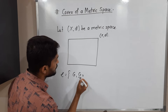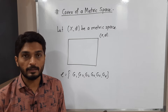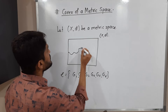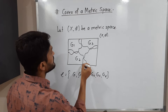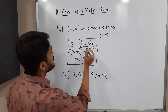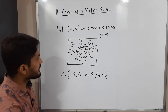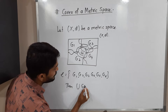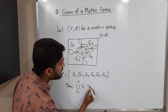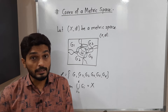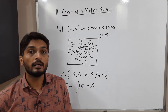Let us consider subsets G1, G2, G3, G4, G5, and G6 — all these are subsets of metric space X, D. Let me show all these sets in this diagram. I will consider their union. The union of G_i, i running from 1 to 6. Their union is nothing but the entire metric space X. It means we have a collection of subsets of X, and their union is going to cover the metric space X. Then we call it a cover of metric space X, D.